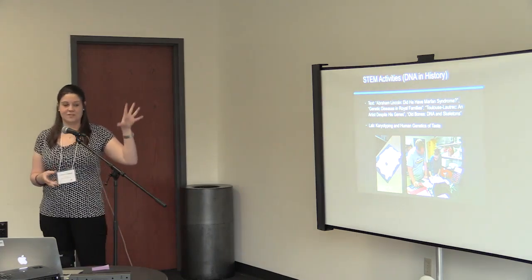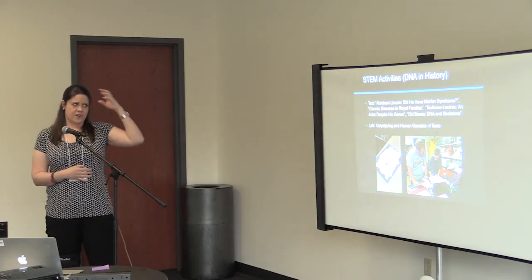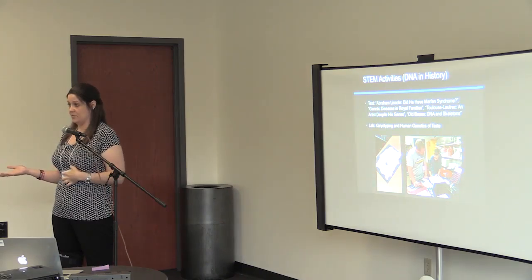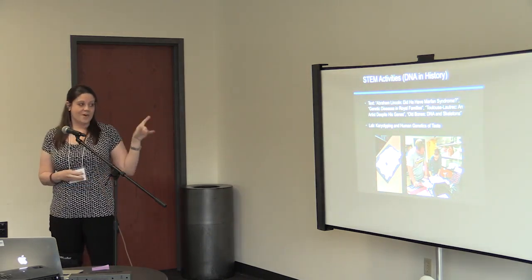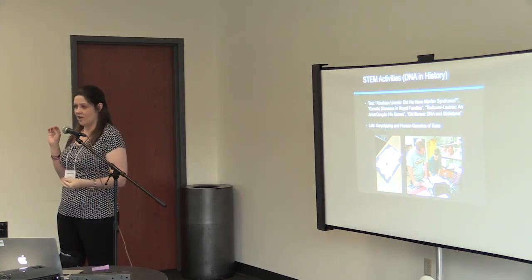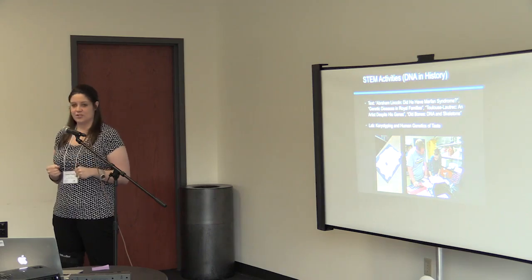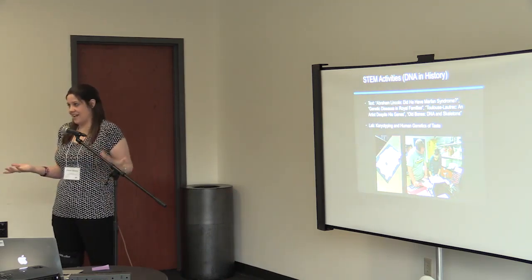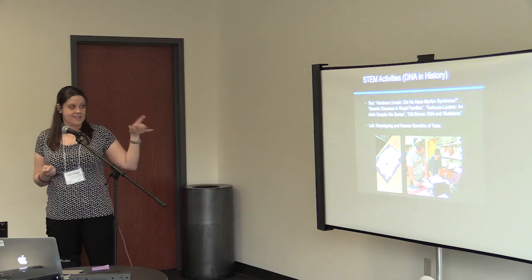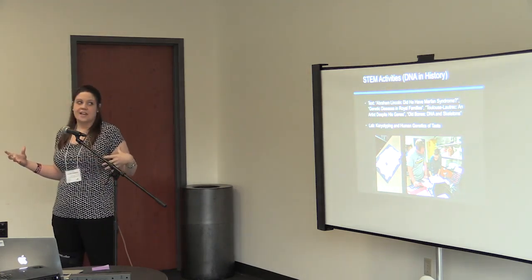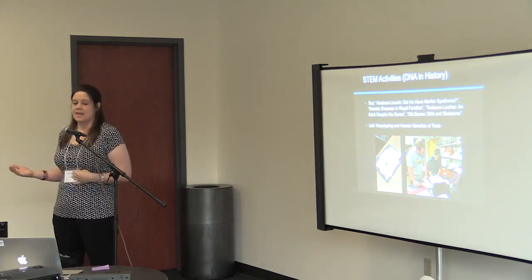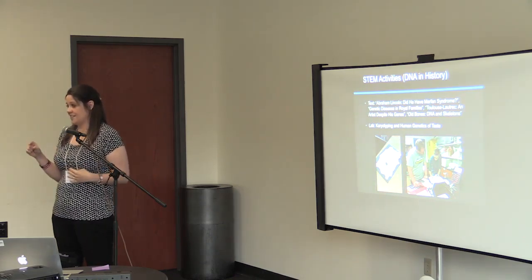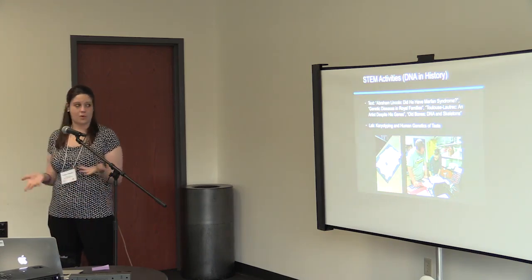The first group — DNA in history — focused on Abraham Lincoln and Marfan syndrome, genetic diseases, and royal families, including hemophilia. One boy in this group is a hardcore history nerd, and he loved this project because it pulled that in for him — I hadn't even thought about that when I began. Their specific lab was a genetics of taste test, and they tested over a hundred kids in the school to see what specific genes certain peers had, giving them a correlation.